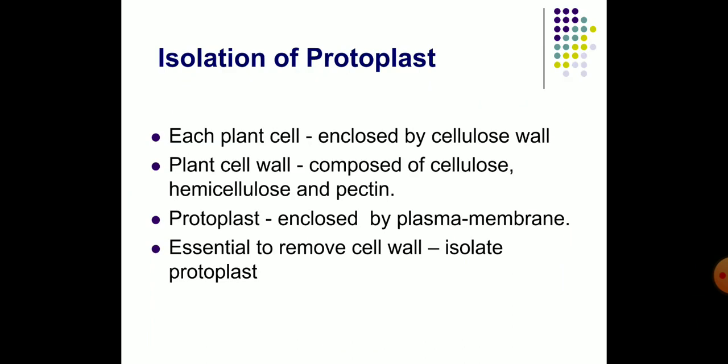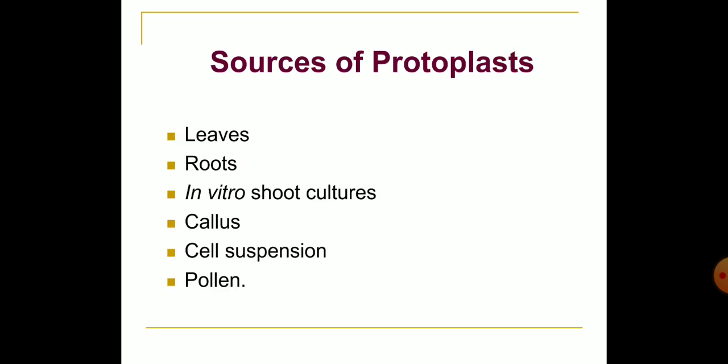Each plant cell is enclosed by a cell wall. The plant cell wall is composed of cellulose, hemicellulose and pectin. Protoplast is the content enclosed by the plasma membrane. To obtain isolated protoplasts, it is essential to remove the cell wall. Cellulose, hemicellulose and pectin can be degraded by the enzymes cellulase, hemicellulase and pectinase.